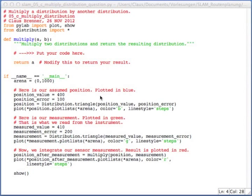So, now let's implement this. What I prepared for you is a main function that is really very simple. It sets a position and a position error, and then generates a position distribution, namely in this case a triangle distribution, using that position and error. And then this is plotted.